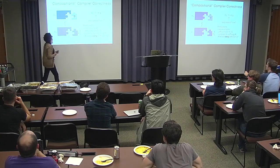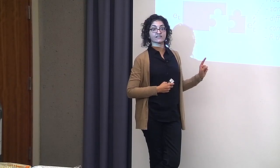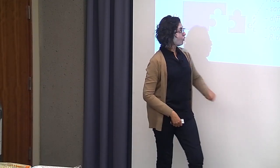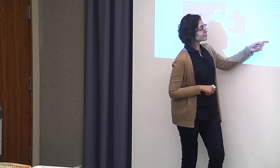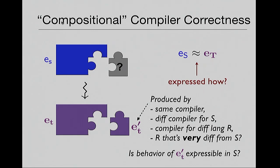Other choices: allow linking with ET primes produced by a different compiler but for the same source language S, or a compiler for a very different language R. And then there's something subtle: do you wish to allow linking with ET prime whose behavior cannot even be expressed in your source language? Remember we're after semantics-preserving compilation — this is a scenario where you're not preserving anything. I would argue we want that if we want multi-language software.